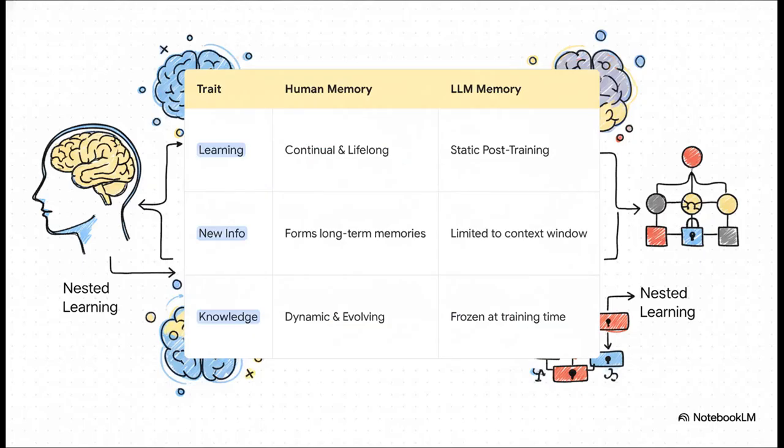Now, this is where it gets really interesting. The researchers make this fantastic analogy to a real neurological condition called anterograde amnesia, where a person can't make new long-term memories. Just look at this comparison. Human memory. It's continual. It's dynamic. It's always evolving. And LLM's memory? It's static. It's stuck with its training data. It's like it's perpetually living in the past, forever stuck on the day its training finished.